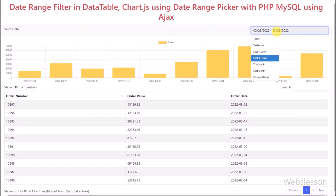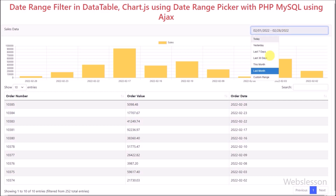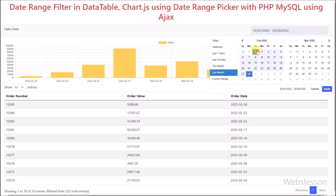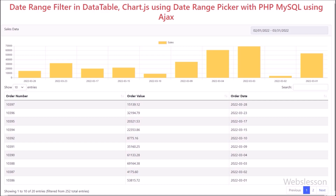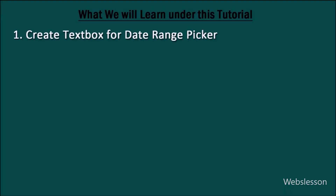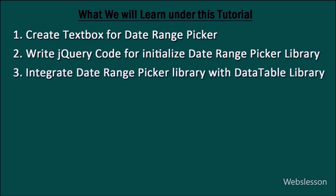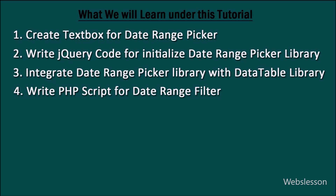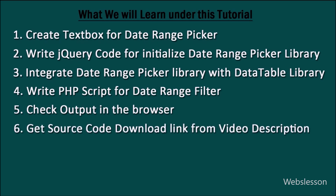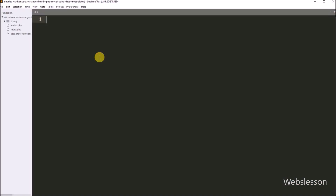Now in this part, we will integrate the date range picker plugin into this DataTable and Chart.js application and make an advanced date range filter application. When we filter data using PHP with AJAX, the DataTable and Chart.js library data must change in real time. We have also put the source code download link under this video description, so check it.